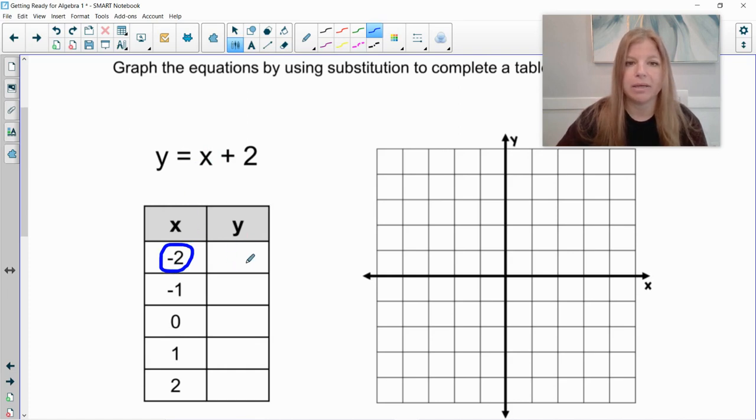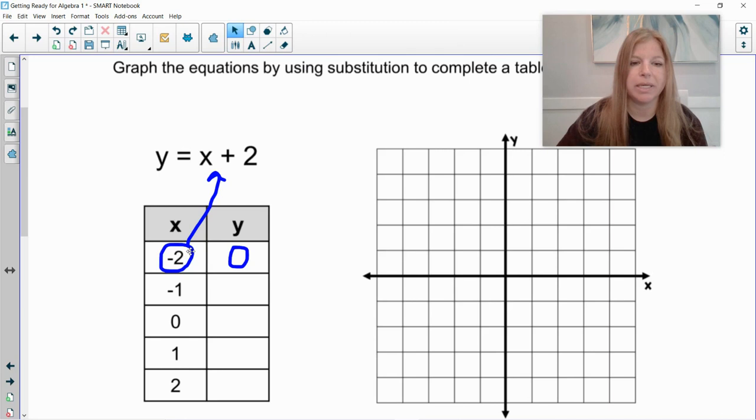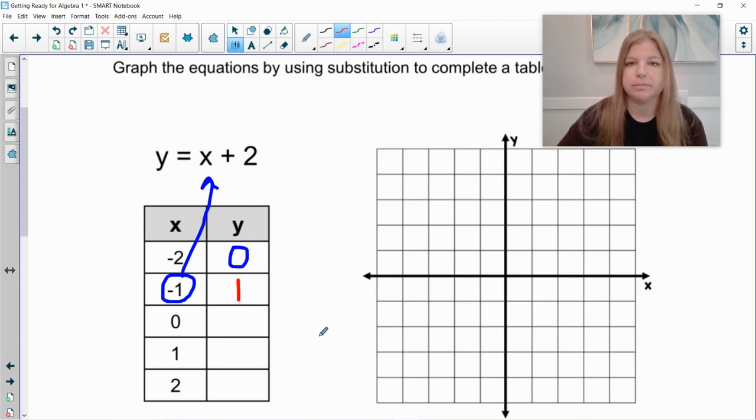So the first y value that I want to calculate is when x is negative 2. So think about what would happen if I plug in negative 2 for x. Negative 2 plus 2 is 0. So when x is negative 2, my y value would be equal to 0. Then I would plug in the next x value, and actually what I can do is I can drag down my circle here and I can say now I'm going to plug in a negative 1. You get the point. So now if I plug in a negative 1 in for x, negative 1 plus 2 is positive 1. Awesome.